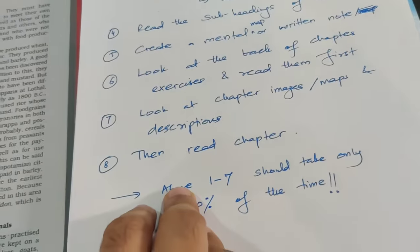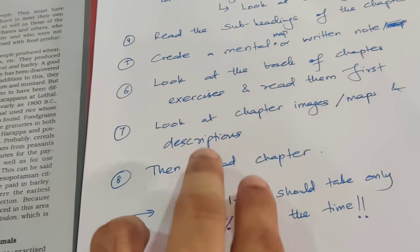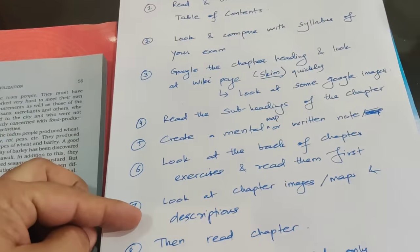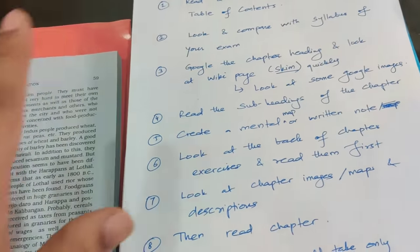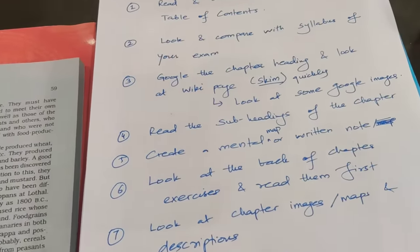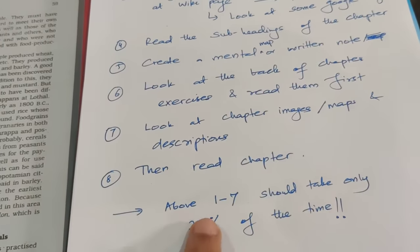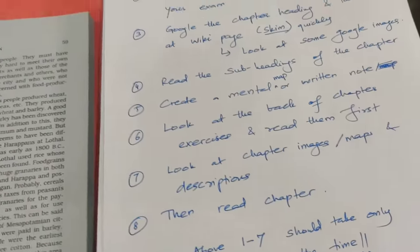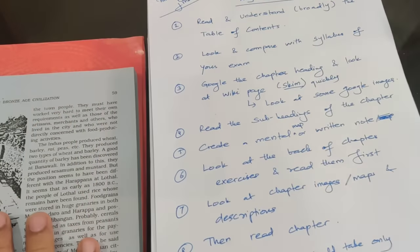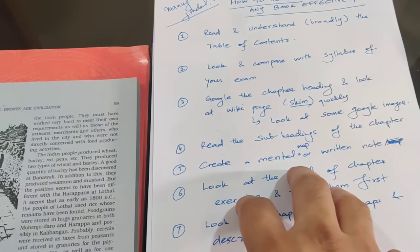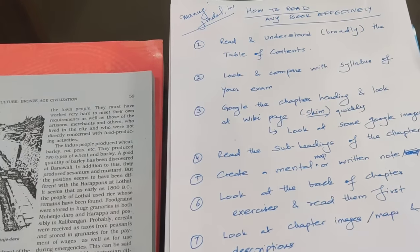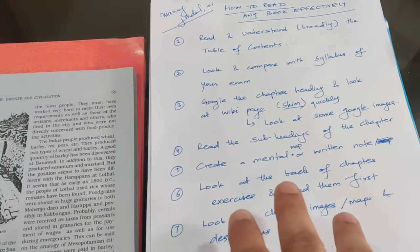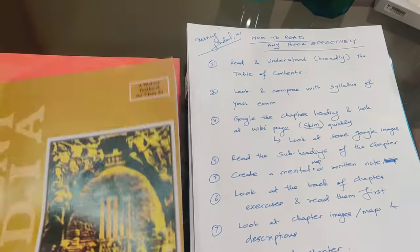Finally, the eighth step is to come and read the chapter. I'm telling you, if you do steps one through seven first and then read the chapter, it will become much easier — you will retain and recall the content much better. Steps one to seven should take only 20% of the time. If you have one hour to read the chapter, spend around 10 to 15 minutes on the preparation steps.